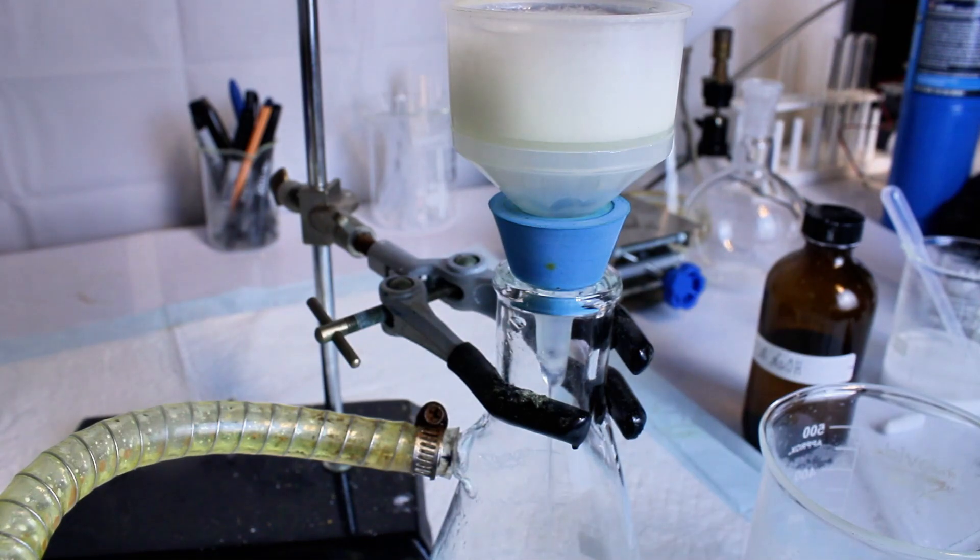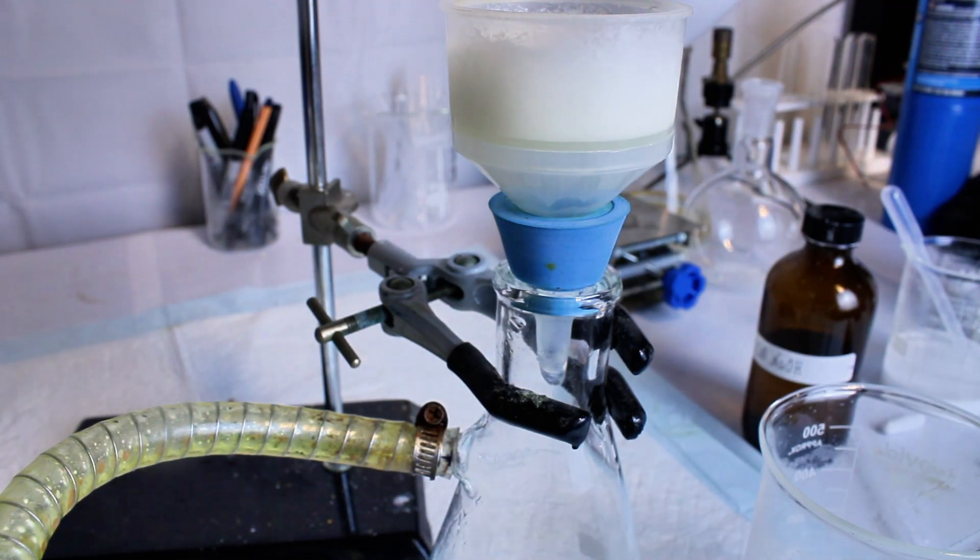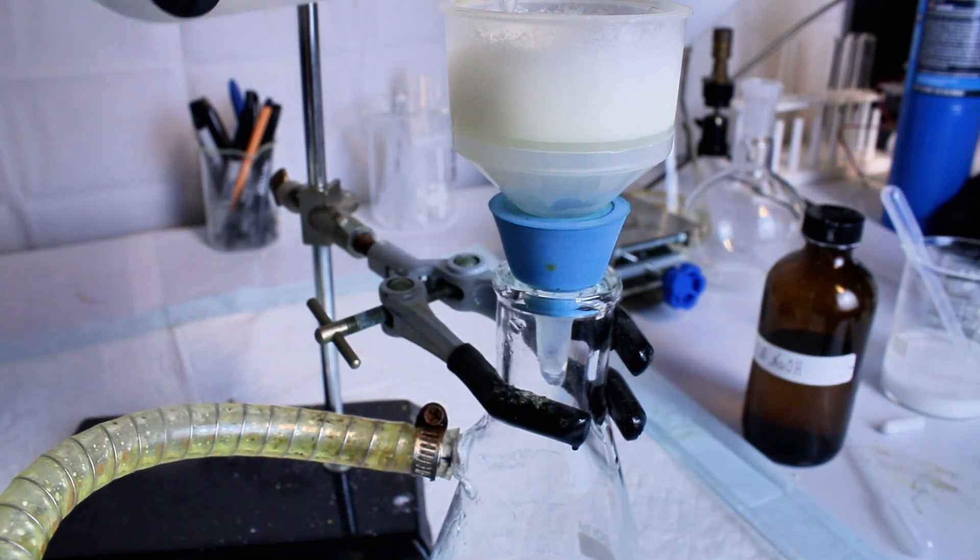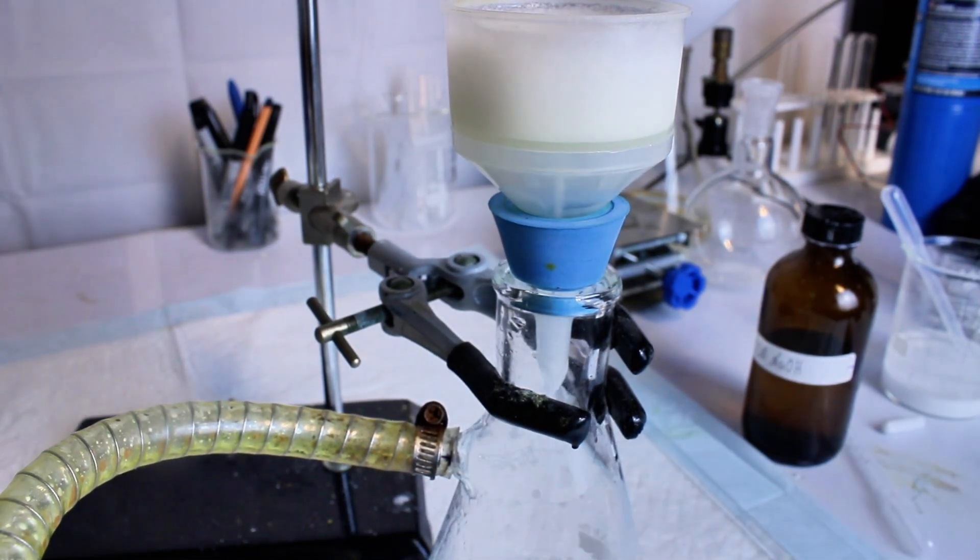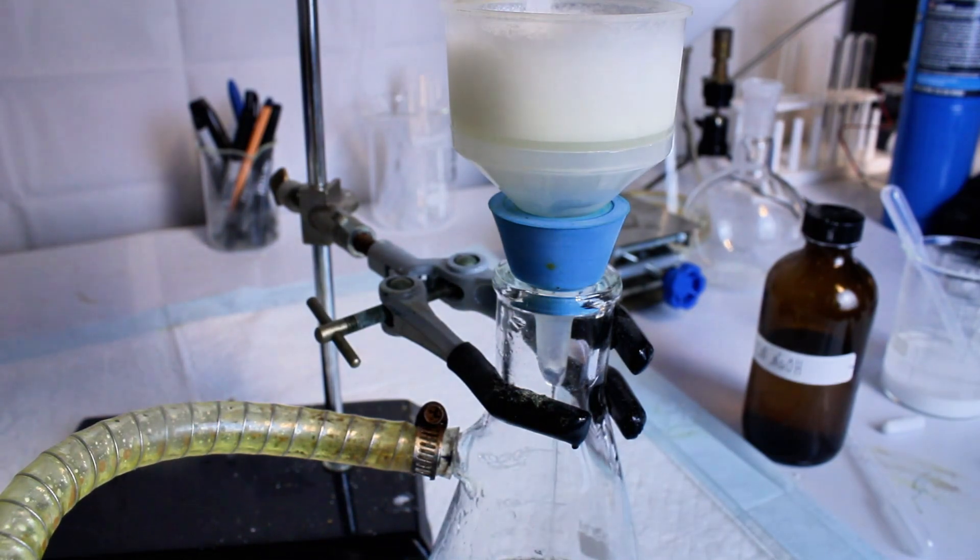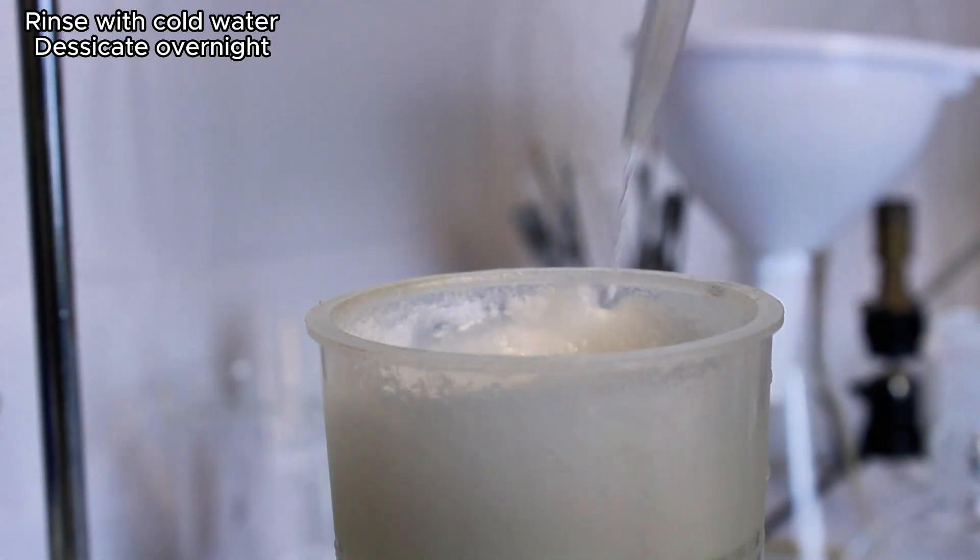I then transfer my product to a drying dish and let it dry overnight in a vacuum desiccator. This leaves me with a final mass of benzocaine of 5.96 grams, which represents a 69% yield, which is okay, but I think it could have been better.